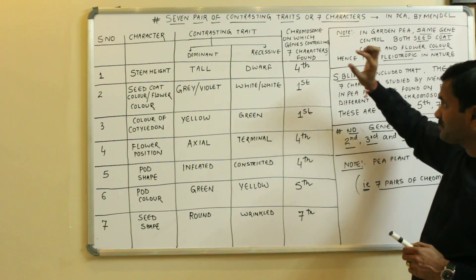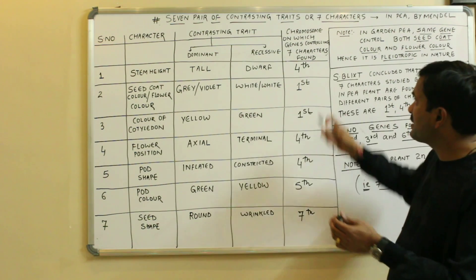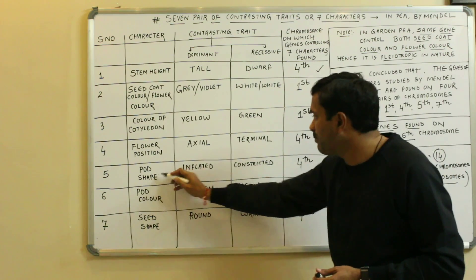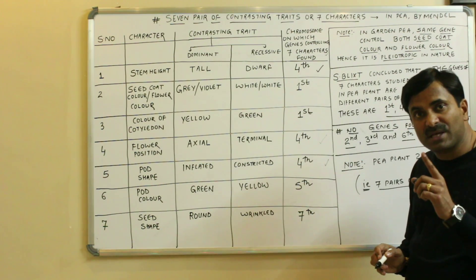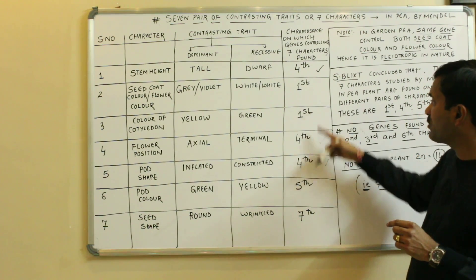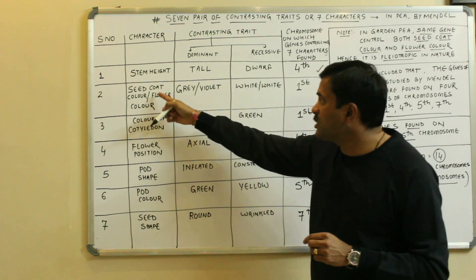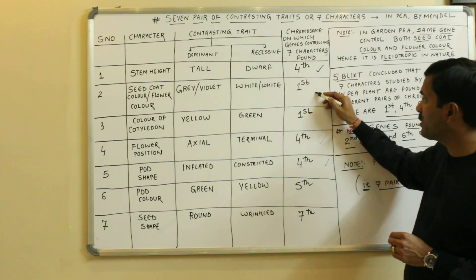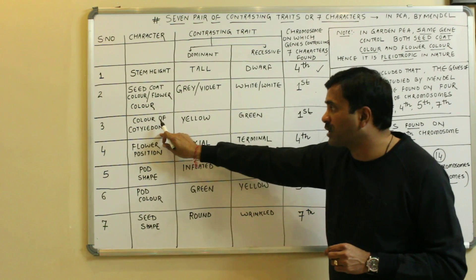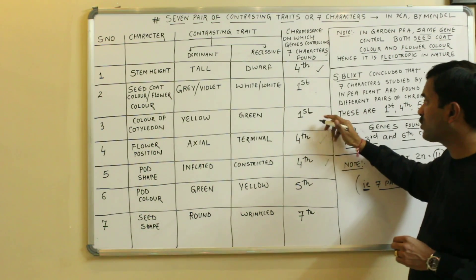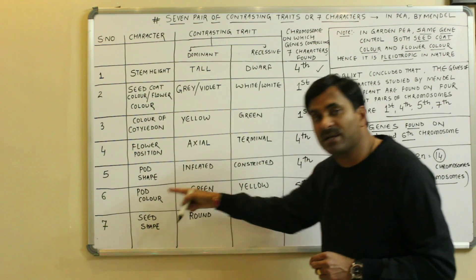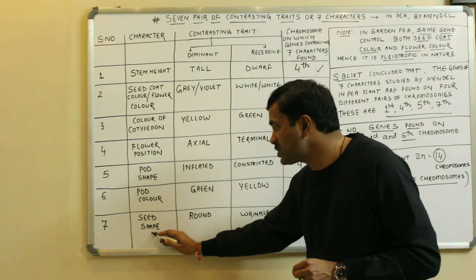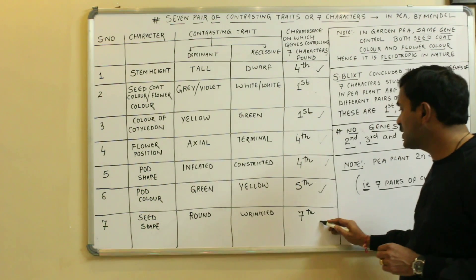To summarize: stem height, flower position, and pod shape — these three characters are controlled by genes found on chromosome number four. Seed coat color and flower color are controlled by genes on chromosome number one. Color of cotyledon is also controlled by genes on chromosome number one. Pod color is controlled by the gene on chromosome number five, and seed shape by the gene on chromosome number seven.